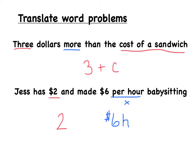So, what we would have is, Jess has two dollars and she made six dollars per hour babysitting. We would just add an addition sign in between. So, the final algebraic expression that we would have is 2 plus 6H.